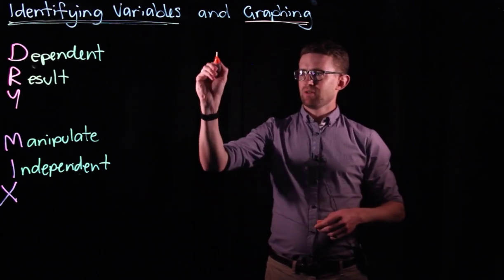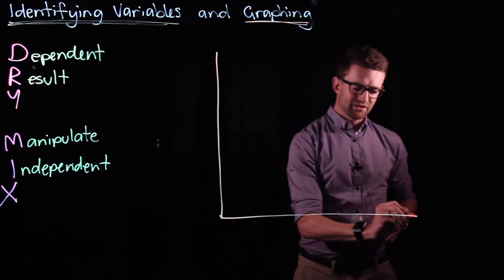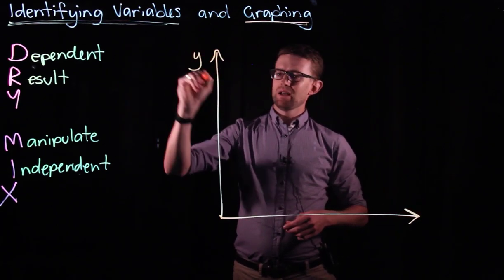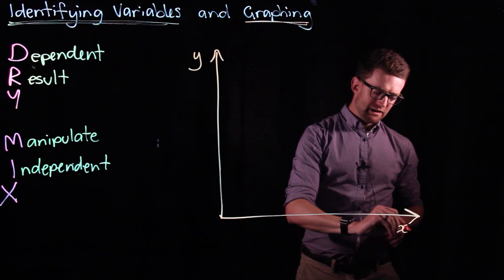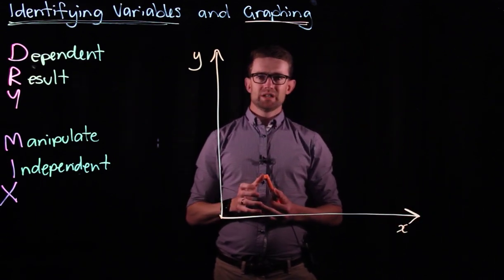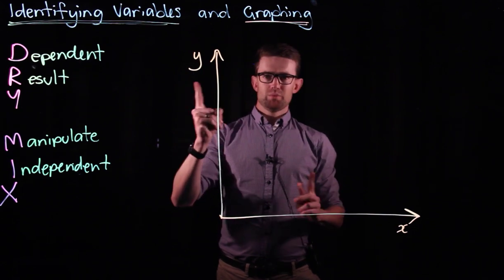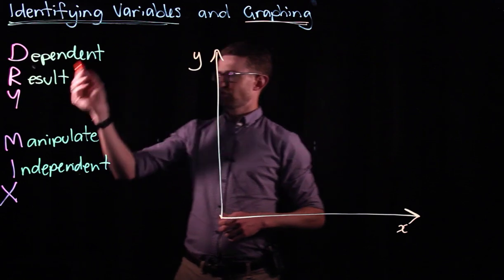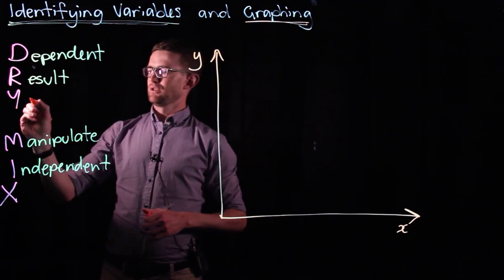Now we know with a graph we have two sets of axes. We have our y and our x. And when we're graphing in a scientific experiment it's really important that we put the right variable on the right axis. And DRY MIX helps us to work that out.